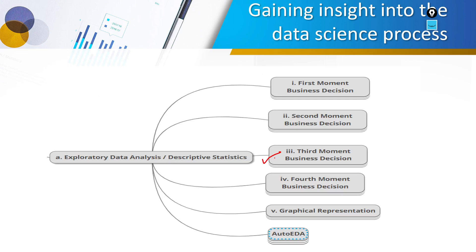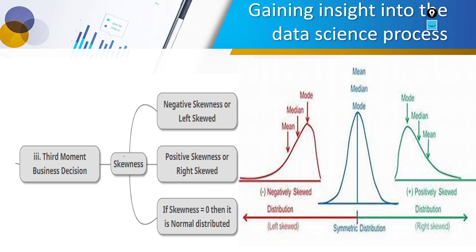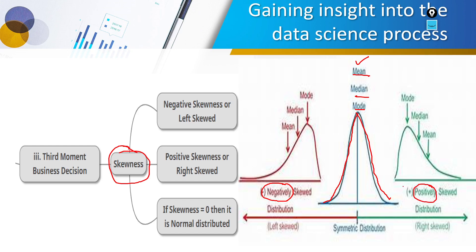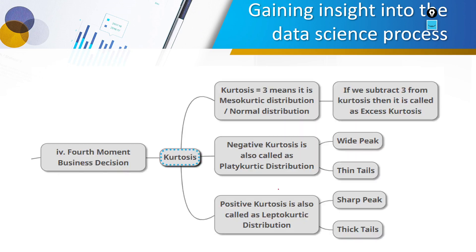The third moment business decision talks about skewness. When plotting any feature, the ideal distribution should have mean, median, and mode at the same point — a normal distribution. But in reality you may have left-skewed (negatively skewed) or right-skewed (positively skewed) data. Skewness should be zero for normally distributed data. If your feature is normally distributed, the model will work well.